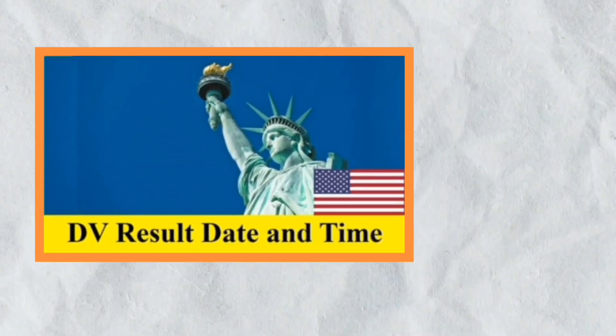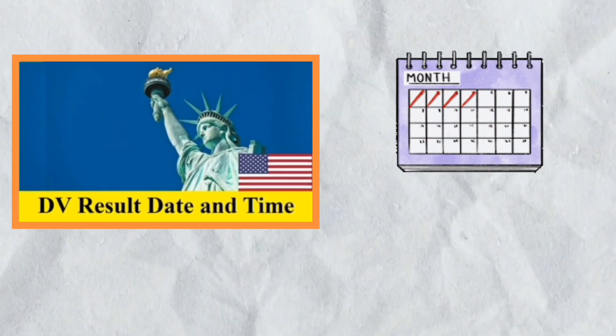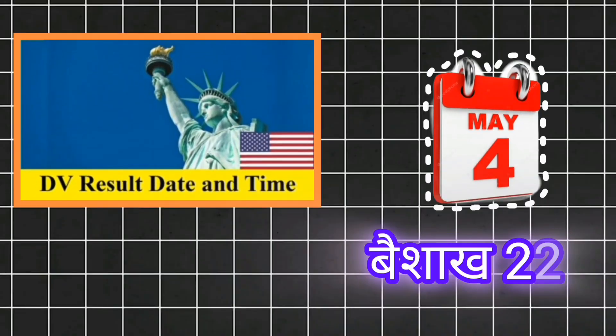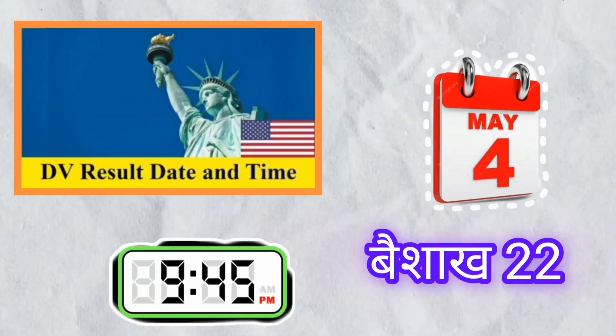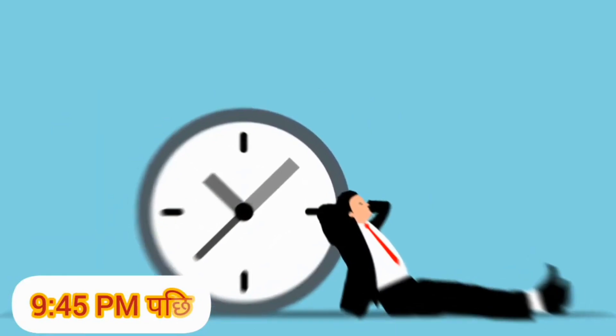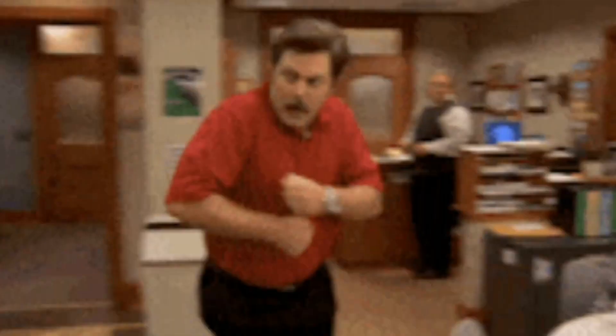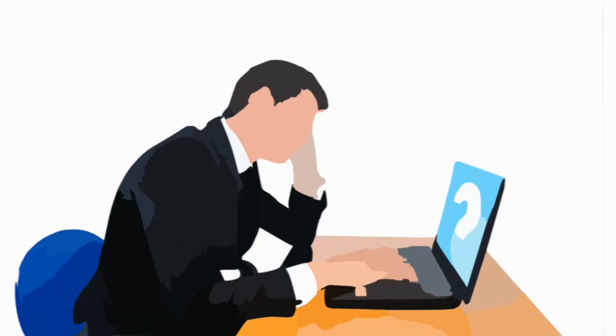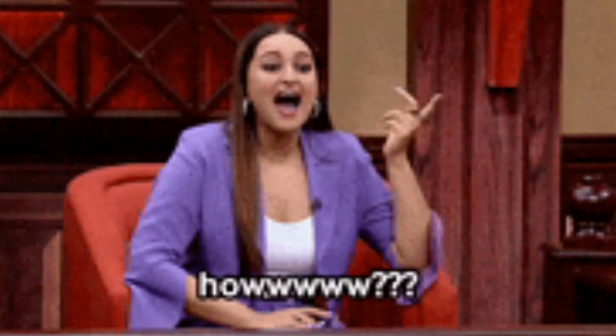This is the result of DB Lottery on 4th May 22nd, about 9:45pm. In this video, we will see how to check the result of DB Lottery in 30 seconds.